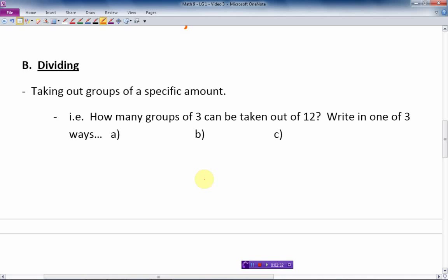So how many groups of three can we take out of 12? We can write this expression in one of three ways. I can say to myself, how many groups of three can I take out of 12? I just divide like that. That's the way I write it and do a long division. Another way to write it is to write it like this: 12 divided by 3.